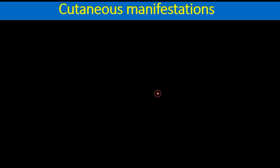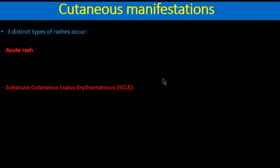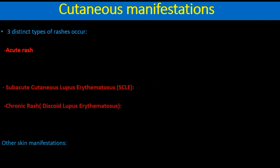We are going to talk about some cutaneous manifestations of systemic lupus erythematosus. There may be three distinct types of rash that can occur: acute rash, subacute rash or subacute cutaneous lupus erythematosus, chronic rash or discoid lupus erythematosus, and there may be other skin manifestations also.